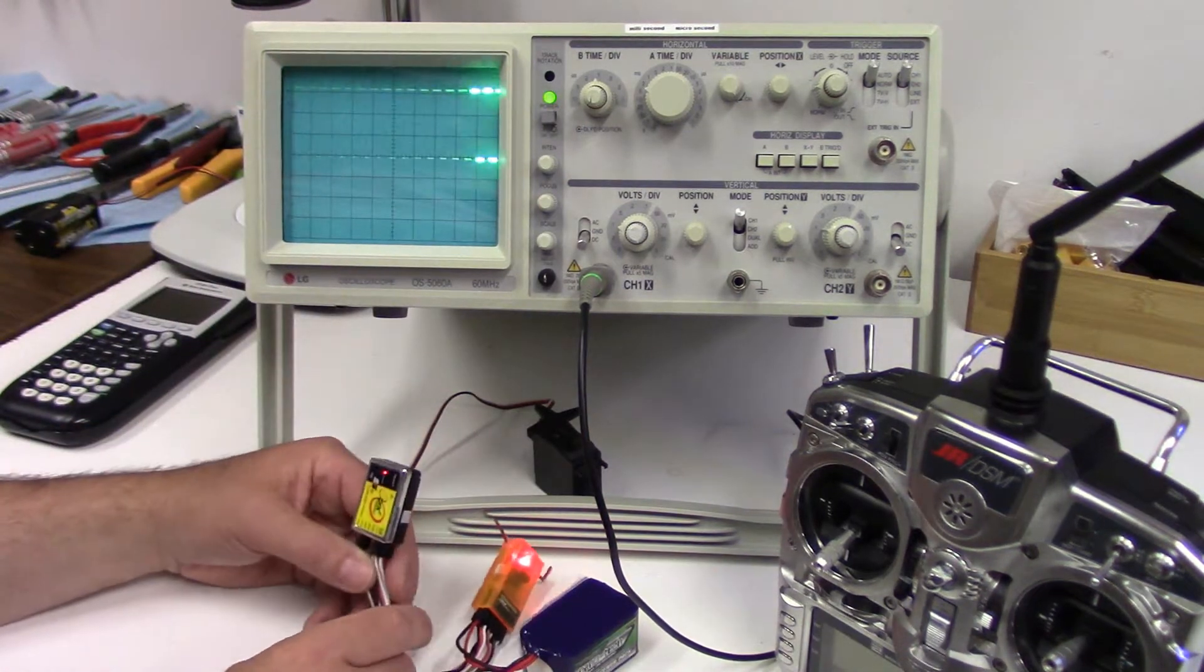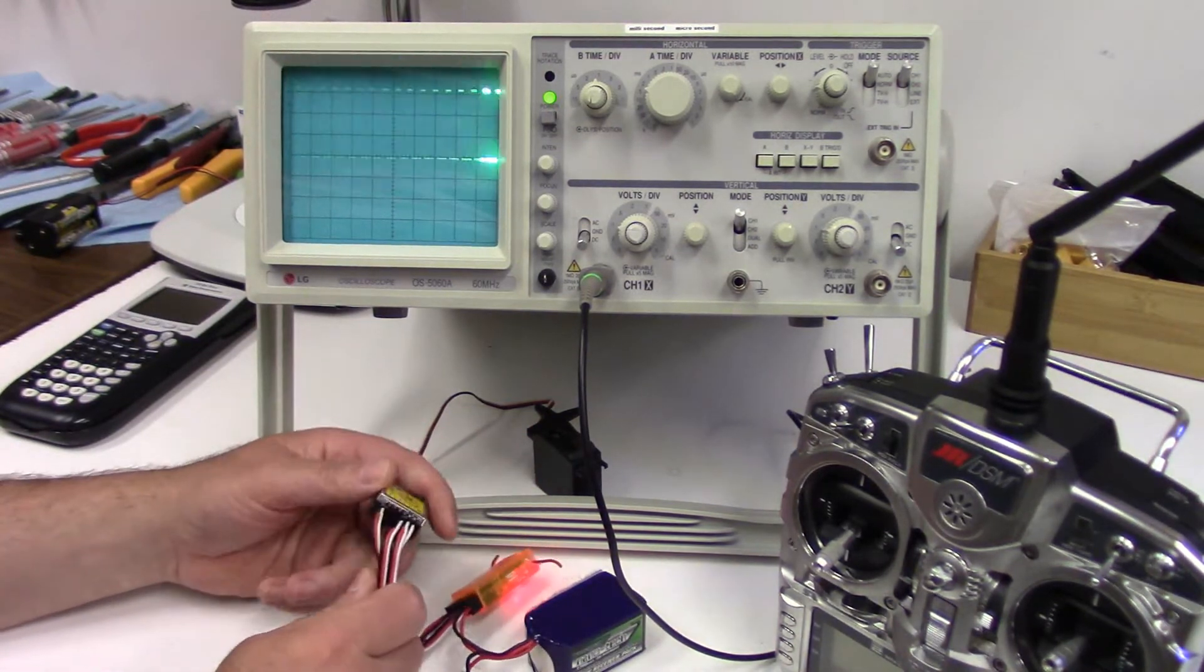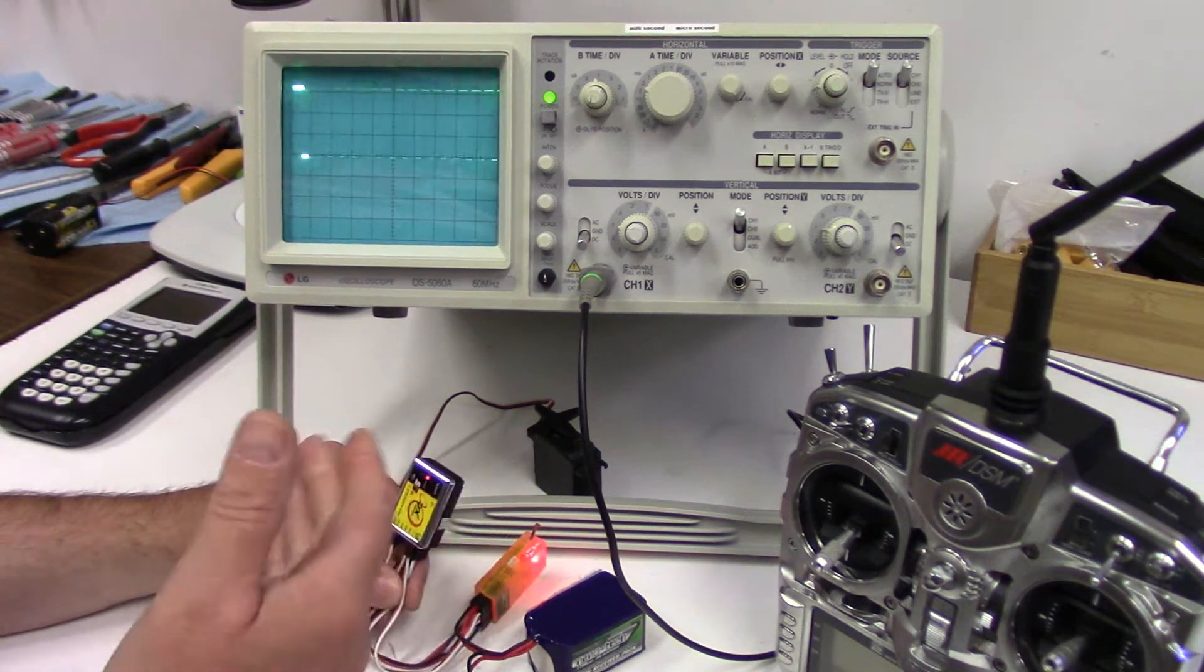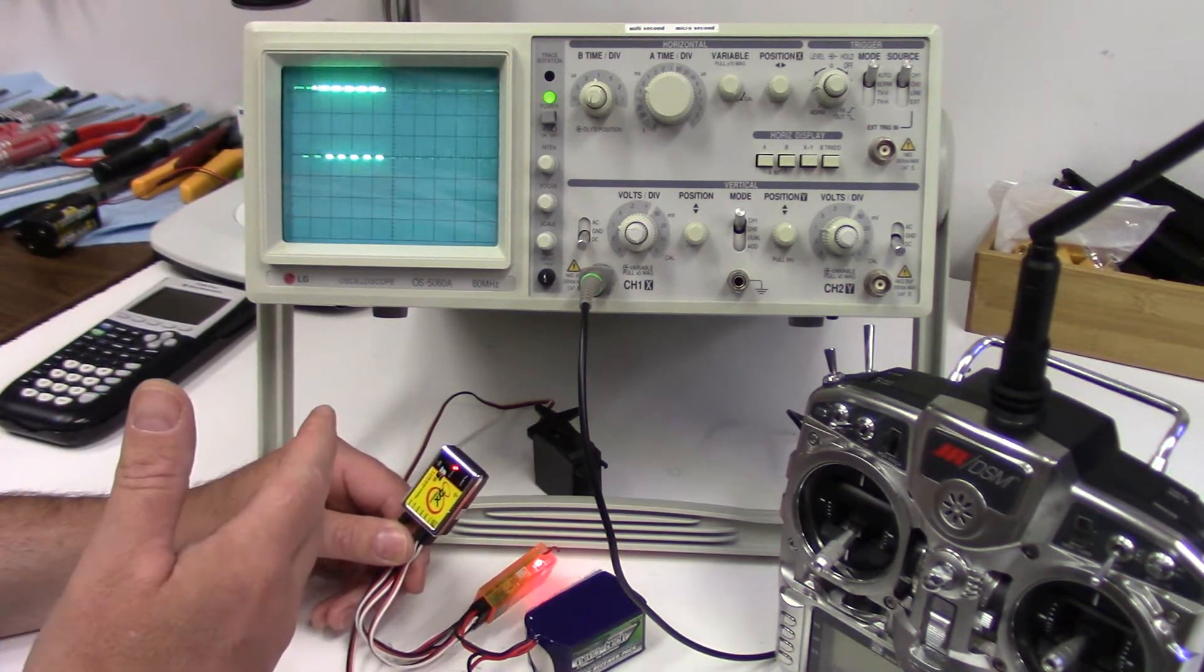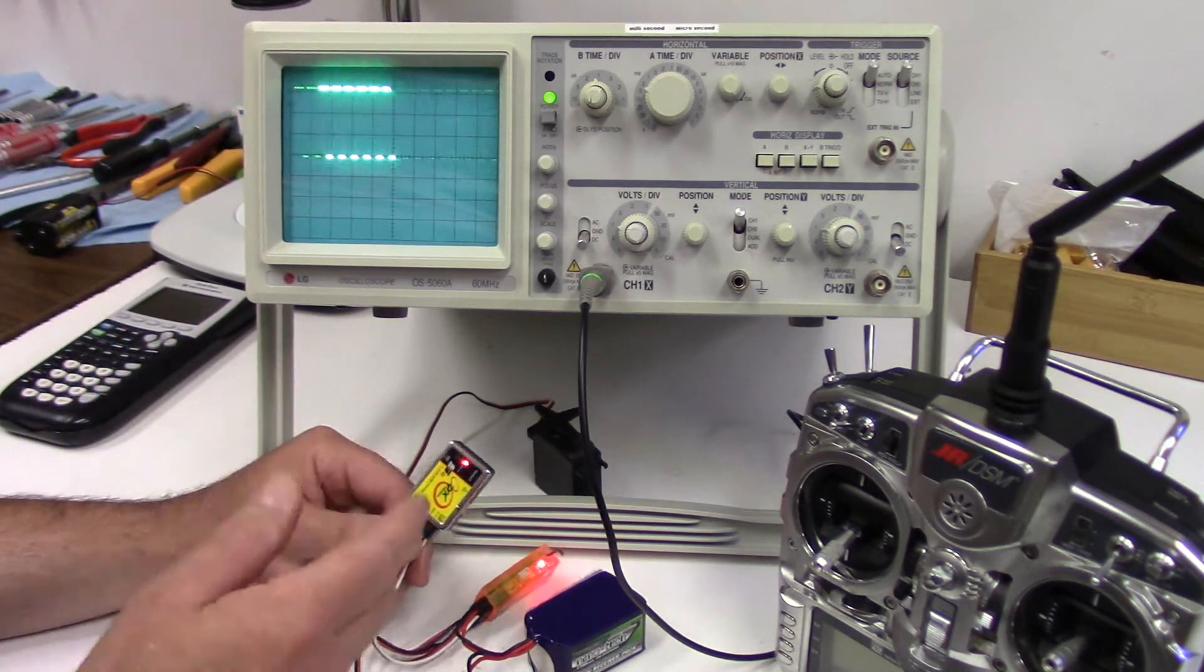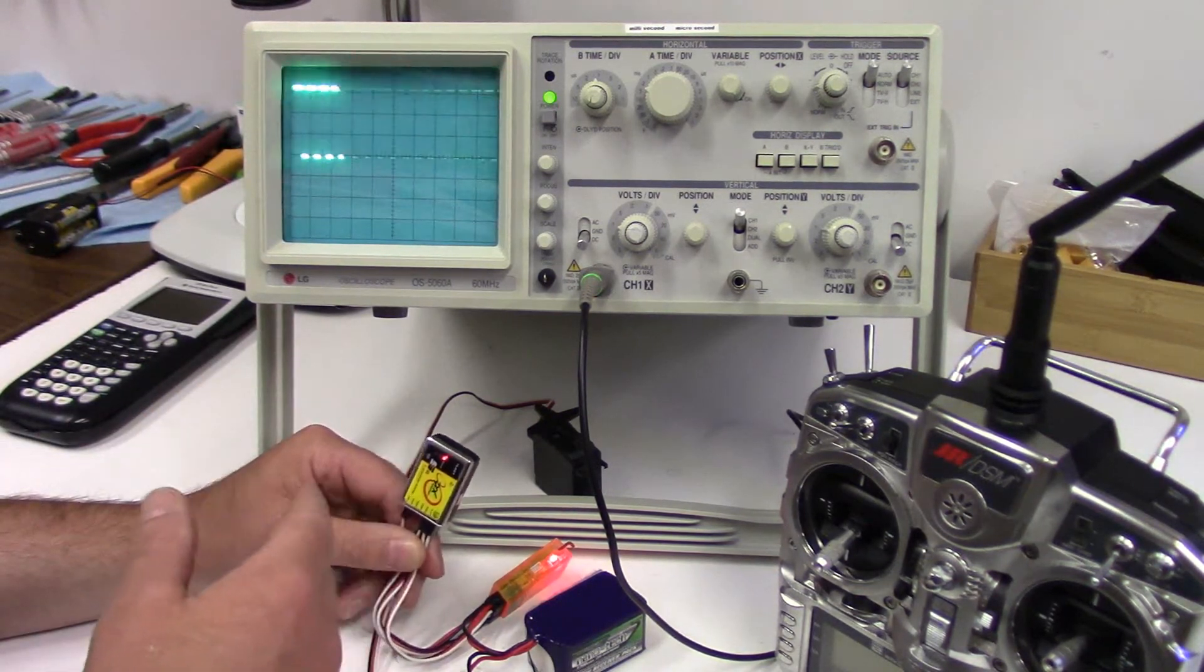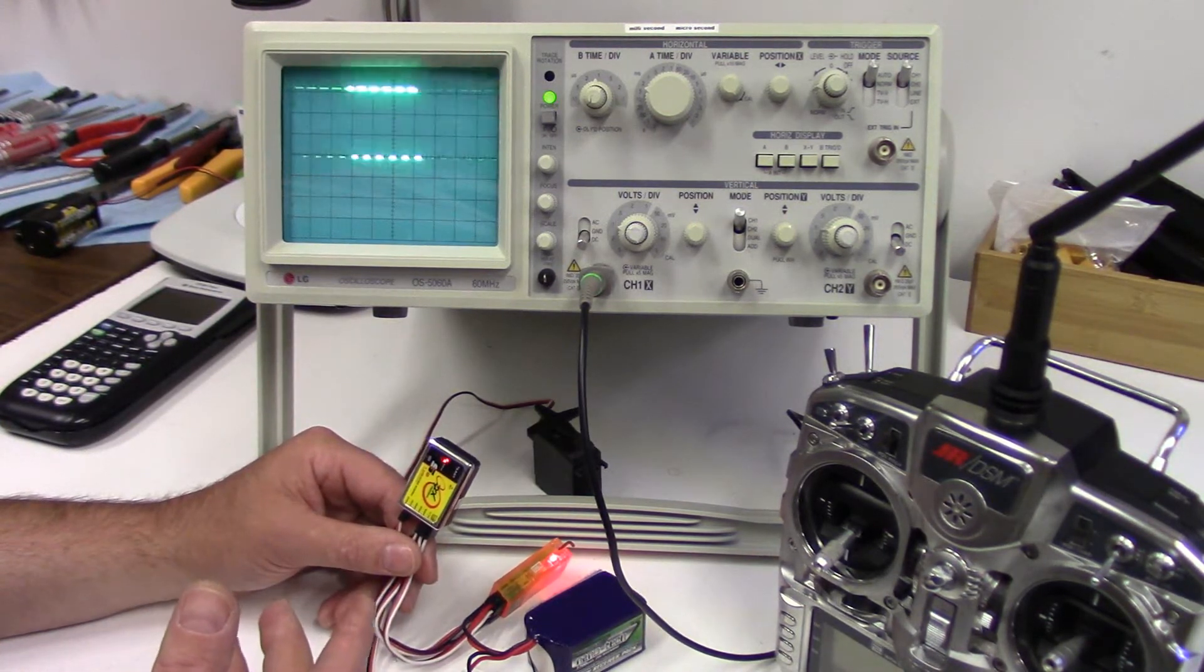What we've got now is we've got a receiver hooked up to a standard flybarless unit. Most flybarless units, when you're setting them up, you've got options to choose digital or analog. If you choose analog servo, that will give you the 50 Hertz rate coming out of the flybarless unit. If you pick digital, generally you will also have more choices in frequency, anywhere from 165 Hertz up to 333 Hertz.